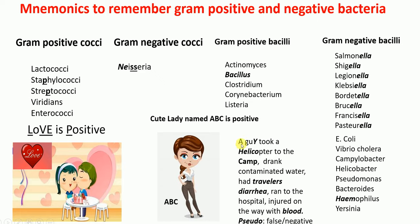Now let me explain the list from the story. The guy — 'Y' refers to Yersinia. He took a helicopter — Helicobacter. Camp is Campylobacter. He drank contaminated water and had traveler's diarrhea: the most common causes of traveler's diarrhea are E. coli and Vibrio cholera.